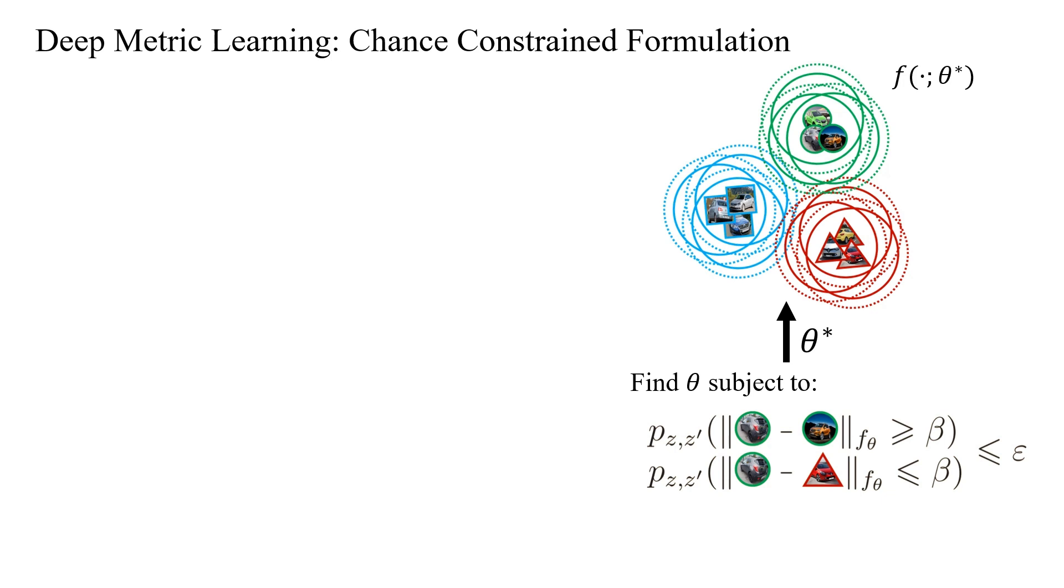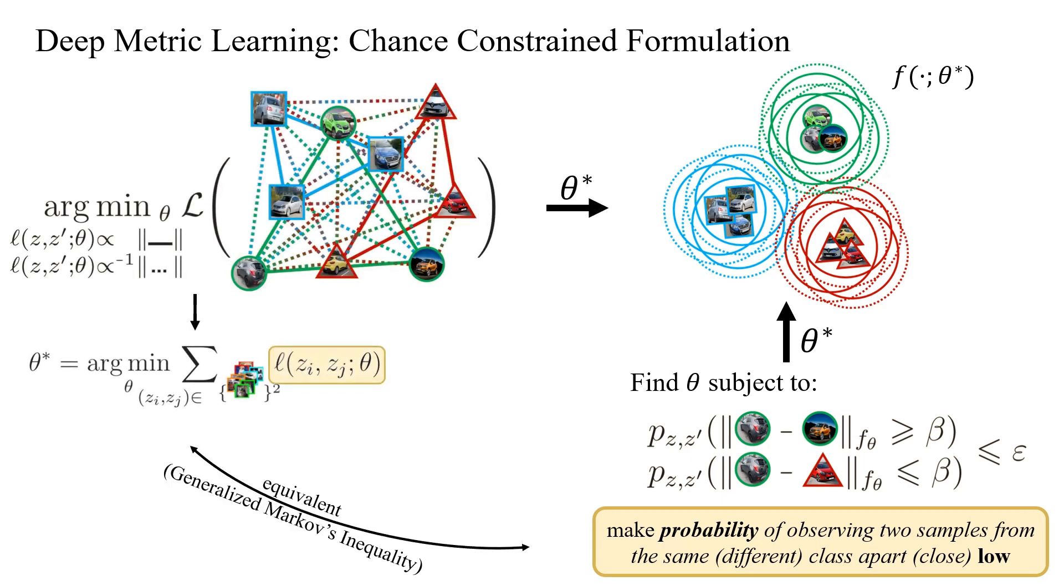These constraints aim to lower the probability of observing two samples from the same class being far apart, or the probability of observing two samples of different classes being close. Our novel formulation is equivalent to the standard pair loss minimizing metric learning problem, especially when the pair loss is the contrastive loss. In fact, it precisely corresponds to a surrogate loss for the chance constraints. This shift in perspective opens up new possibilities for understanding and enhancing metric learning.